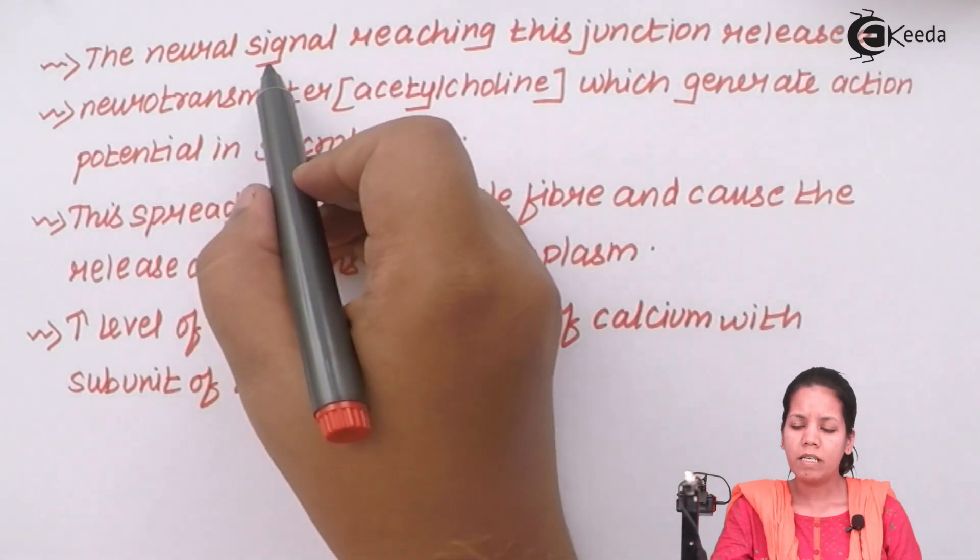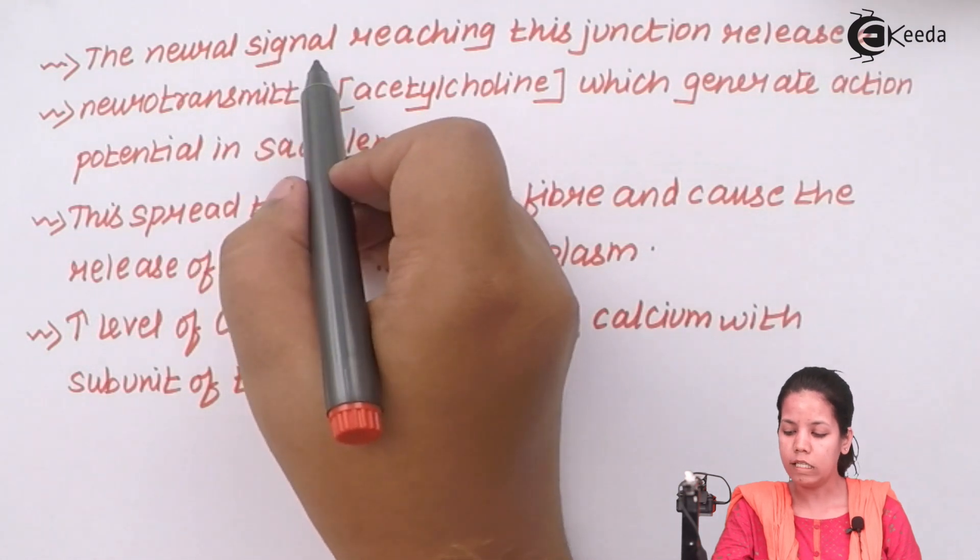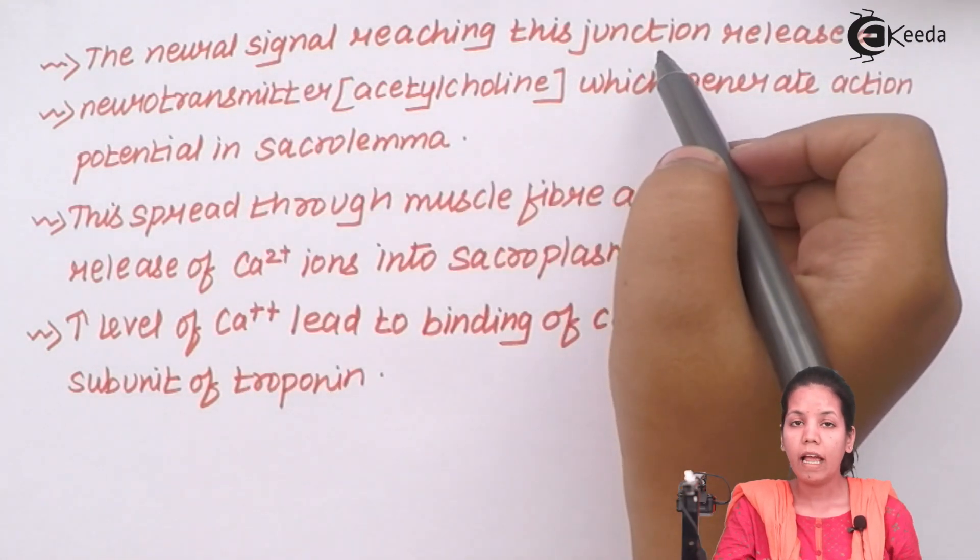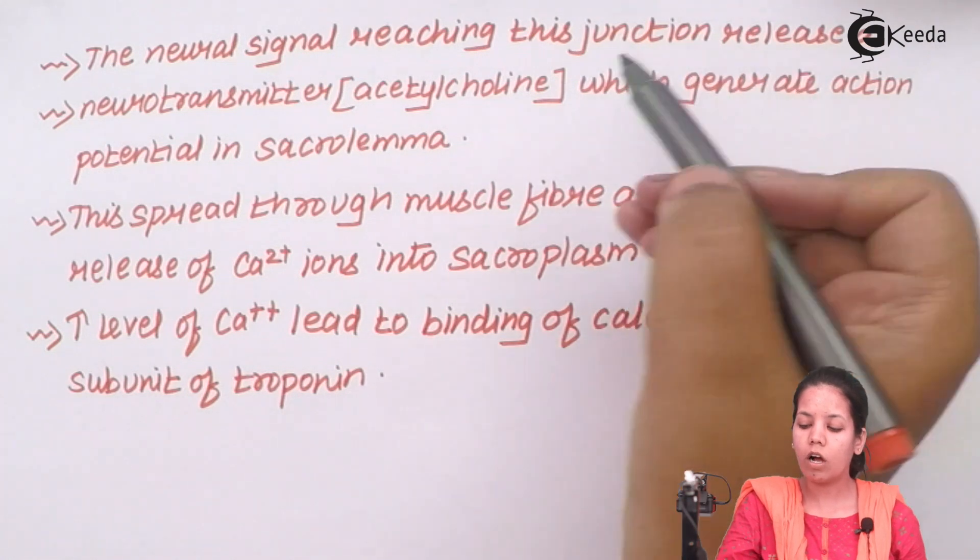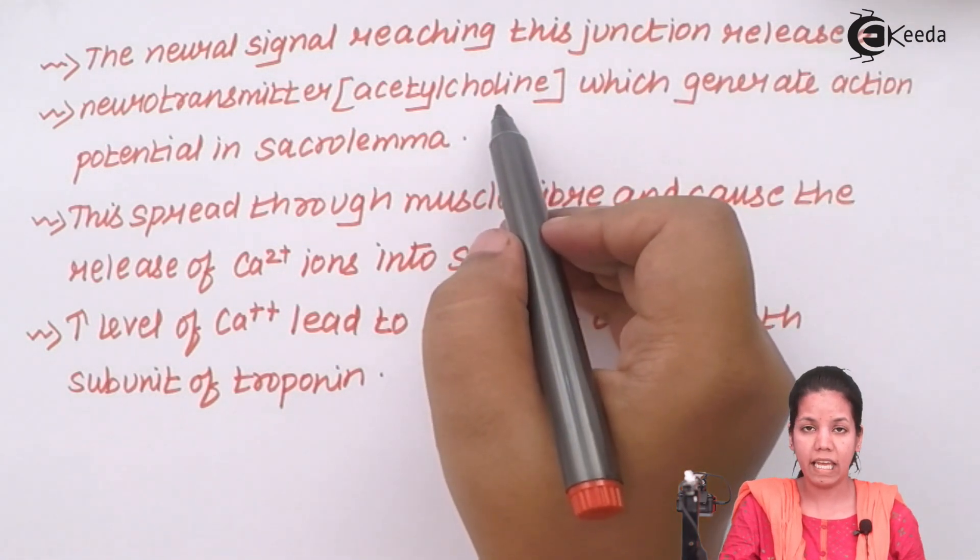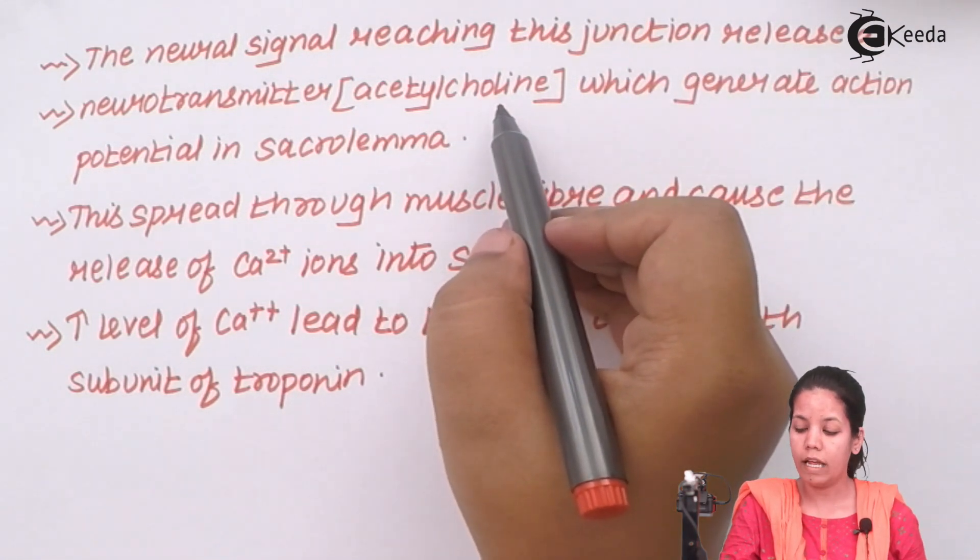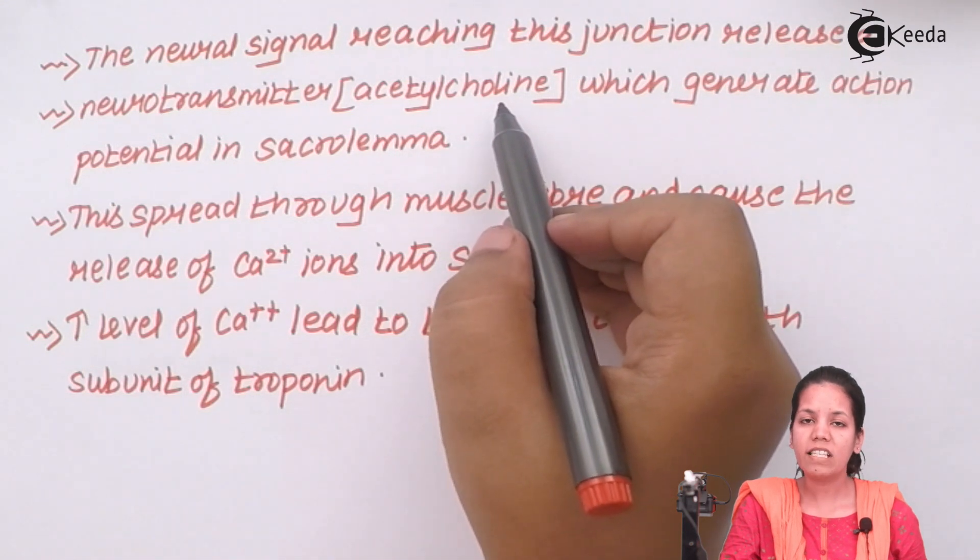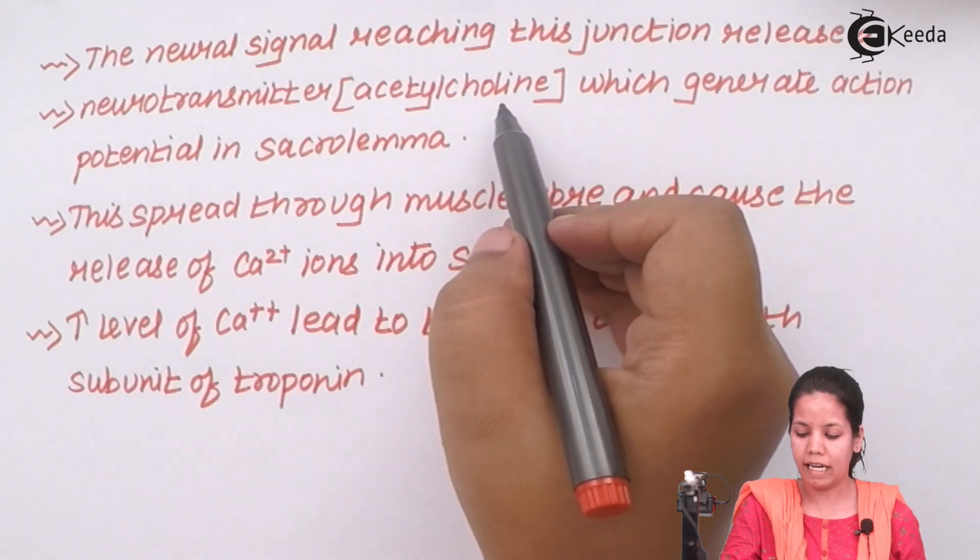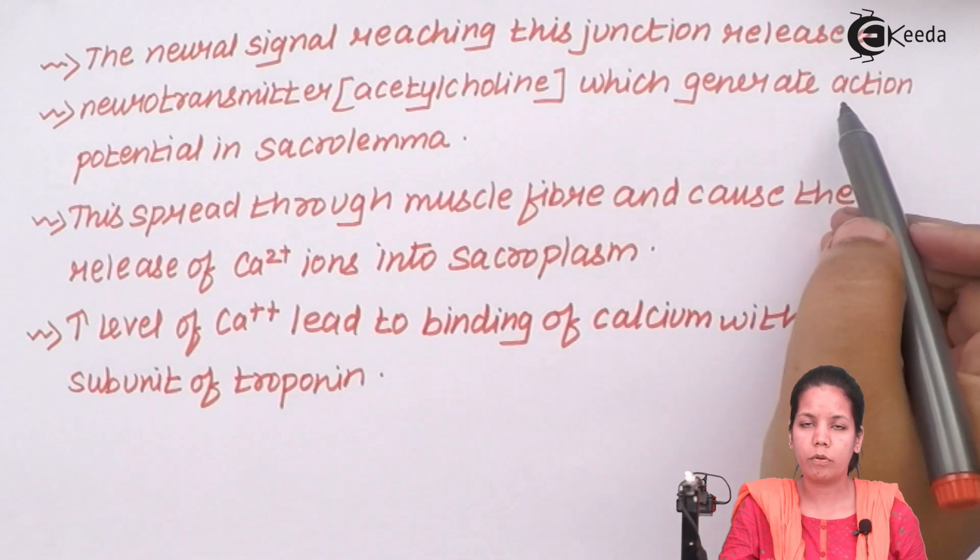Now whenever muscle contraction is happening, the neuronal signaling reaches its junction or its point and releases an enzyme which is termed as ACH or acetylcholine. Now this acetylcholine is exchanged between the synaptic cleft and generates the action potential or you can simply say muscle contraction.